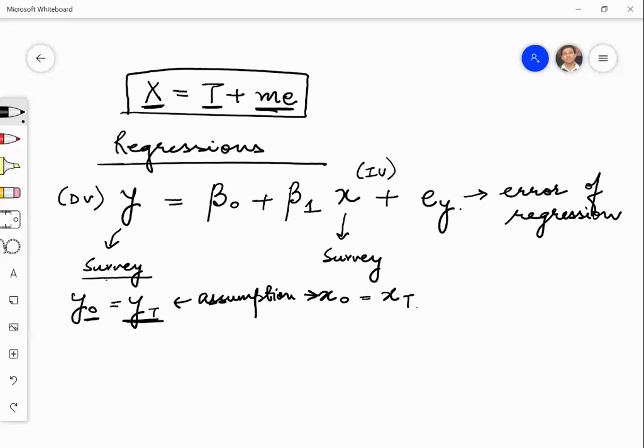Given our constructs are intangible, they are abstract, we cannot make a claim that this measurement error is zero. So this is actually not zero.